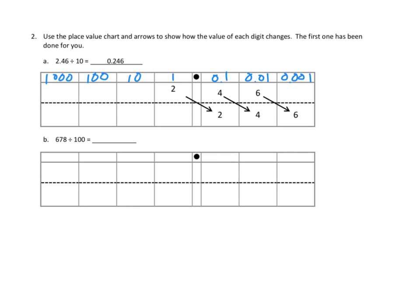Let's see if we can do problem number 2b. We've got our number, 678. So here's our decimal point. This must be 678. This reminds me, I should probably do my place value. That's ones, tens, hundreds, thousands, tenths, hundredths, thousandths.